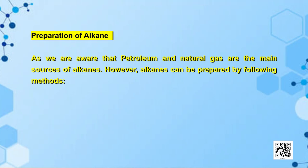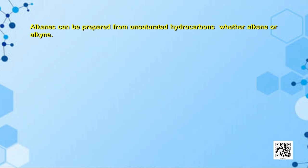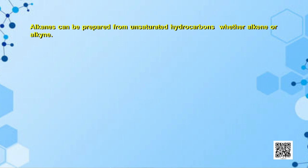Now we will learn how to synthesize alkanes. Petroleum and natural gas are the main sources of alkanes. The first method of preparation is from unsaturated hydrocarbons — alkenes or alkynes. Hydrogen gas adds to alkenes and alkynes in the presence of a finely divided catalyst like platinum, palladium, or nickel to form alkanes. This process is called hydrogenation, meaning addition of hydrogen to multiple bonds. These metals absorb hydrogen gas on their surfaces and activate the hydrogen-hydrogen bond. Platinum and palladium catalyze the reaction at room temperature, but higher temperature and pressure are required with nickel catalyst.